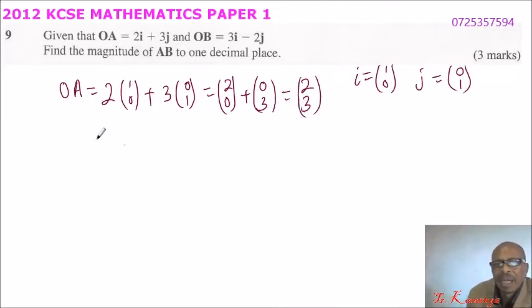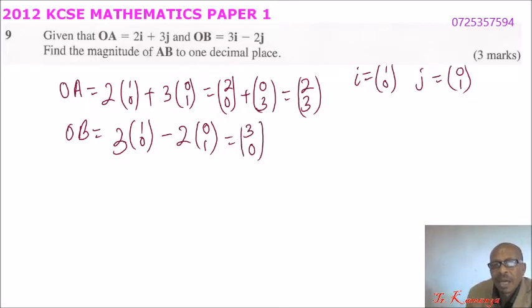We do the same, although we don't need all these steps, but let's just follow the procedure. OB, we do the same, it is 3 times (1, 0) minus 2 times (0, 1). So we multiply 3 times 1, you get (3, 0), 3 times 0 is 0, minus 2 times 0 that will give us 0, 2 times 1 is 2. You put the bracket, which is 3 minus 0 is 3, 0 minus 2 will give you minus 2. So that is our OB.